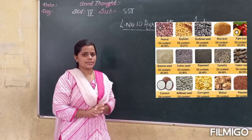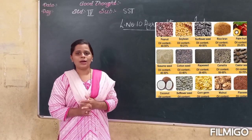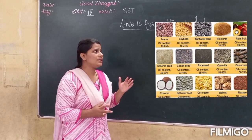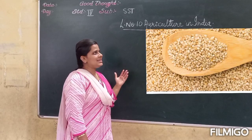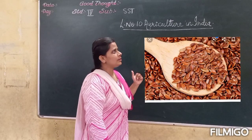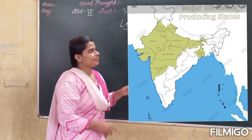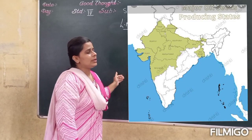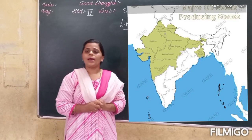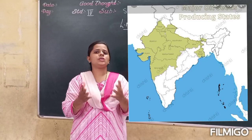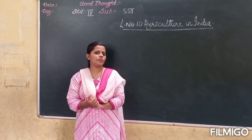Now let's talk about oil seeds. With the help of oil seeds, oil is made. Oil seeds include groundnut, sesame, linseed, sunflower, etc. Oilseeds are grown in every part of India, in every state. This oil is called vegetable oil, which is mostly used in cooking.